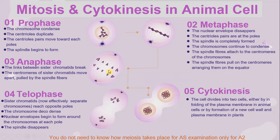The third phase is anaphase. The links between sister chromatids break, and the centromeres of the sister chromatids move apart, pulled by the spindle fibres. The fourth phase is telophase. The sister chromatids — now effectively individual chromosomes — reach opposite poles. The chromosomes decondense, and the nuclear envelope begins to form around the chromosomes at each pole. The spindle slowly disappears.